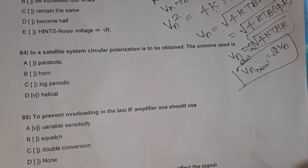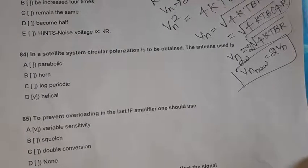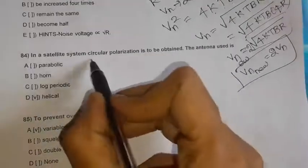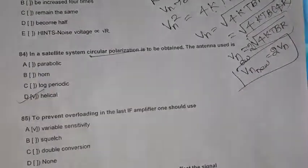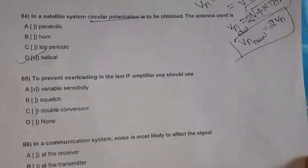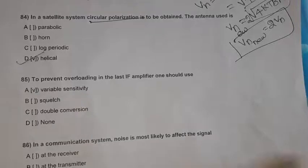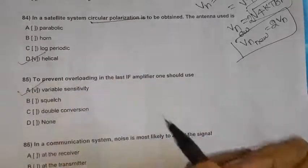Question 84: In a satellite system, for circular polarization, the antenna used is the helical antenna. Question 85: To prevent overloading in the last IF amplifier, one should use variable sensitivity.